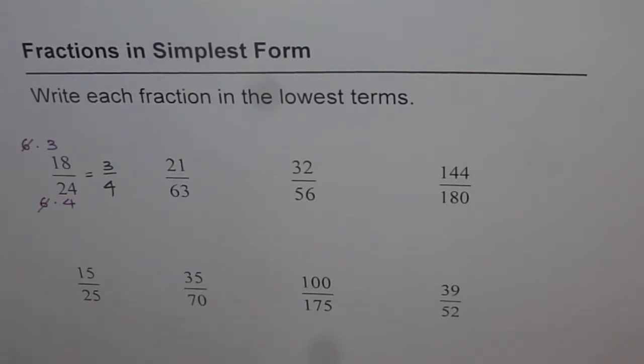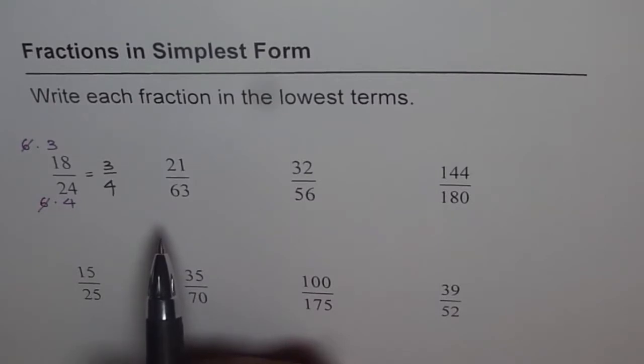Now 21 and 63, do you know what can be a factor common to both? Well, one of the factors is 3. I can tell you how.